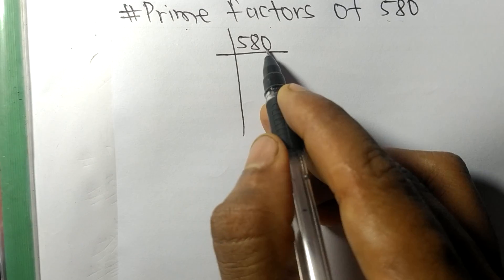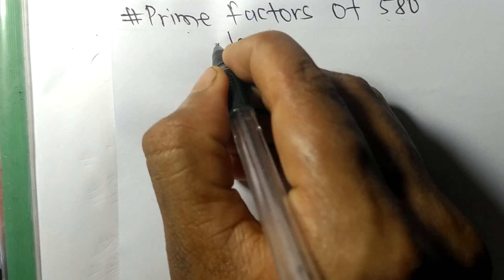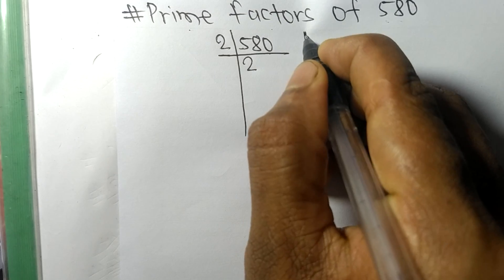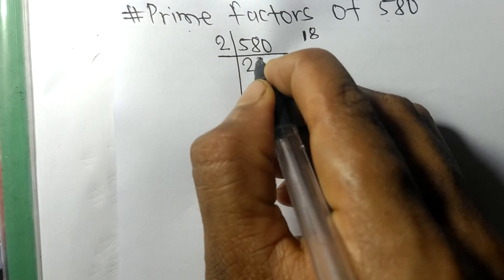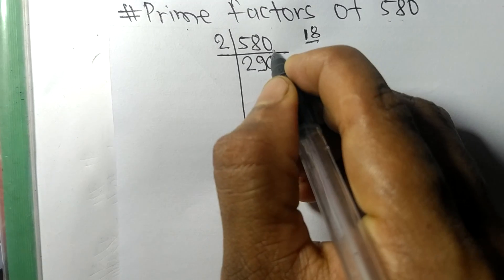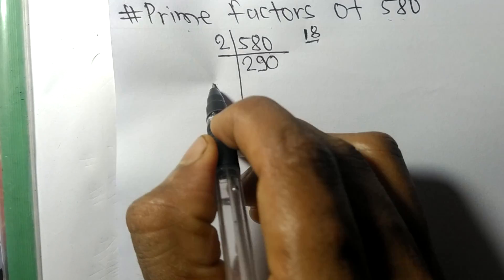0, so this whole number is divisible by 2. 2 times 2 means 4 remainder 1, and 8. 18, 2 times 9 means 18, and 2 times 0 means 0. Again we have